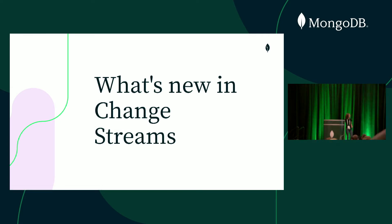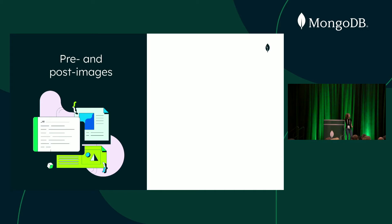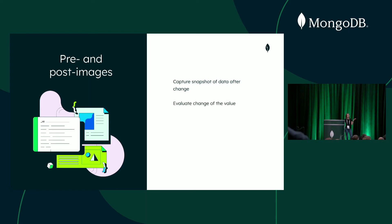Now we switch to what's new in change streams. One theme is pre and post images — what we call the version of the document before and after a change. Why would you want this? Maybe you want a snapshot of the document as it was after the update and send it to the data warehouse. Or you want to evaluate the change in value — for example, tracking flights: if a flight got late for more than 10 minutes, recalculate the schedule for the entire crew; if less, just proceed as normal.